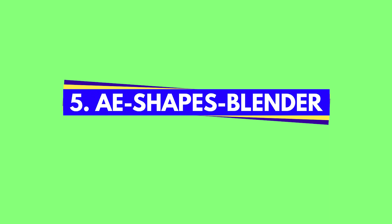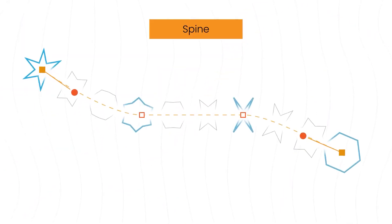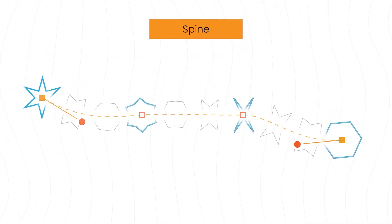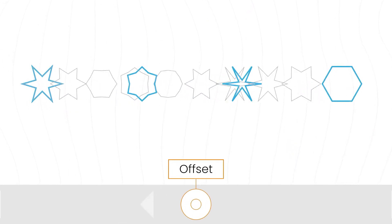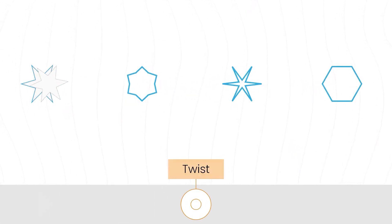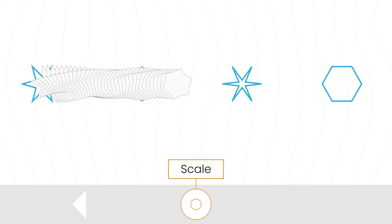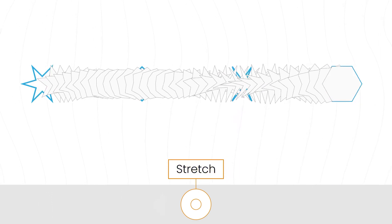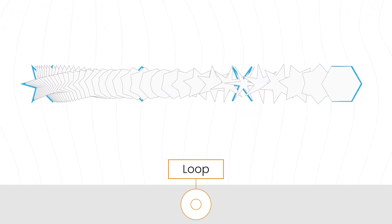Ae Shapes Blender allows you to blend shapes together easily in After Effects. Just select two or more shape paths and click on the button to create the blend. You can choose between advanced and simple properties to control the blend.